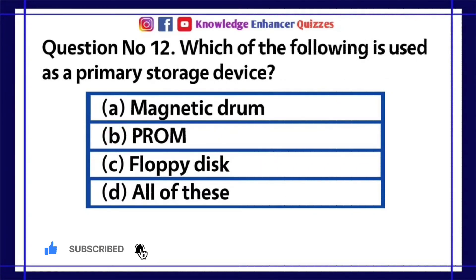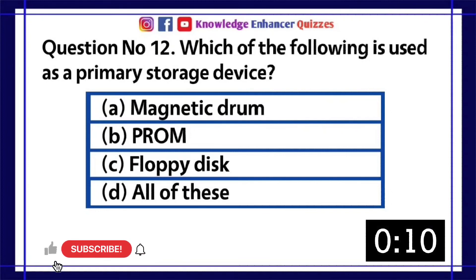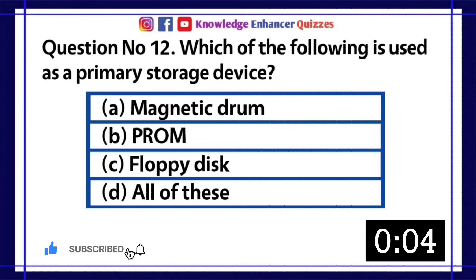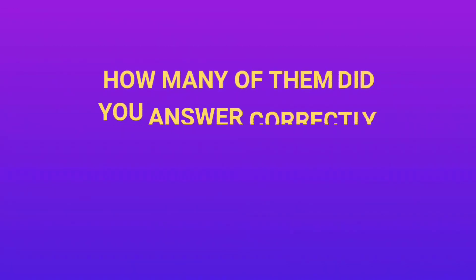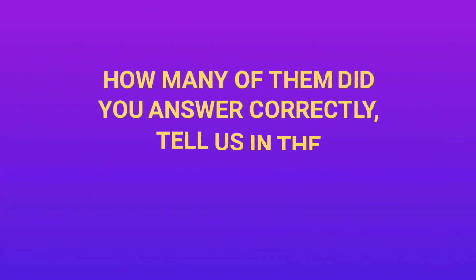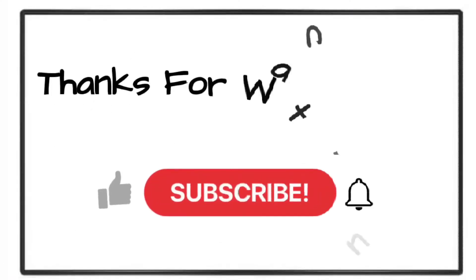Question number 12. Which of the following is used as a primary storage device? A. Magnetic drum. B. PROM. C. Floppy disk. D. All of these. Option B is the right answer. How many of them did you answer correctly? Tell us in the comments section below. Thanks for watching.